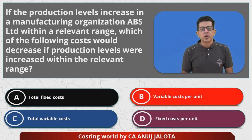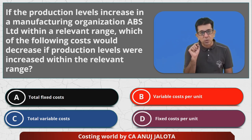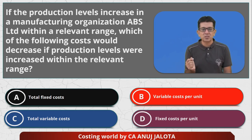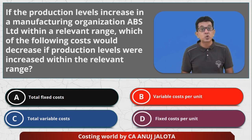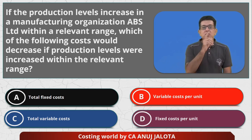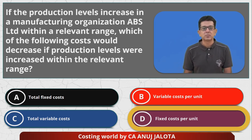Fixed cost per unit — common sense. This should have been the fixed cost. If we were supposed to produce 10,000 units and we produce more, fixed cost per unit will become less because the same fixed cost will spread over a larger number of units. So the answer here should be D. D is the correct answer.